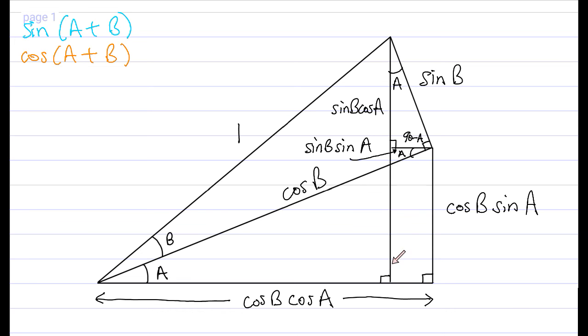But we've already broken up this tall thing into a little piece here, given by this, and a piece here, given by this. We can simply add sine B cosine A, cosine B sine A, and we're going to get our formula.